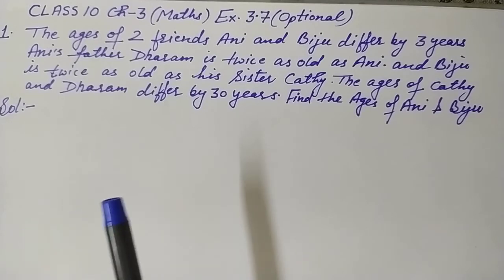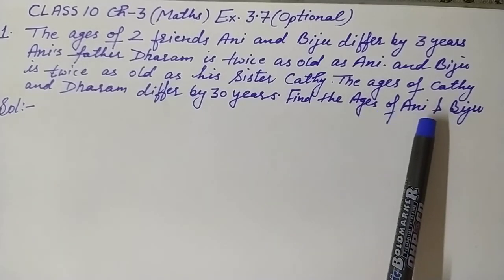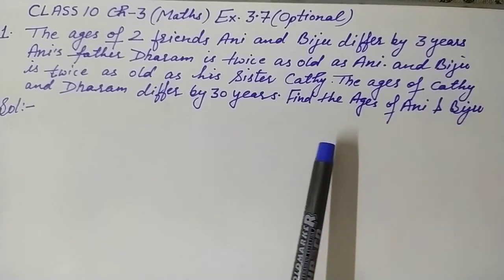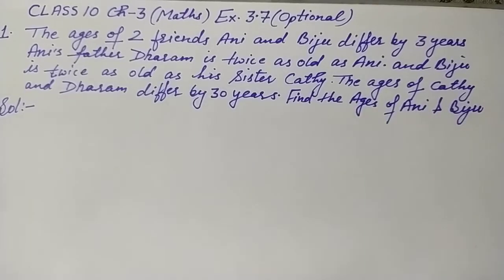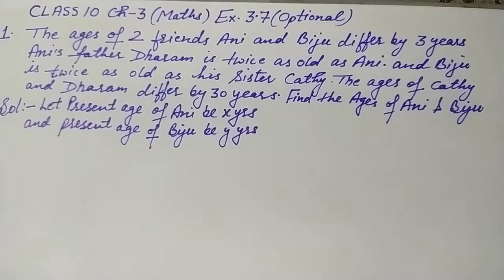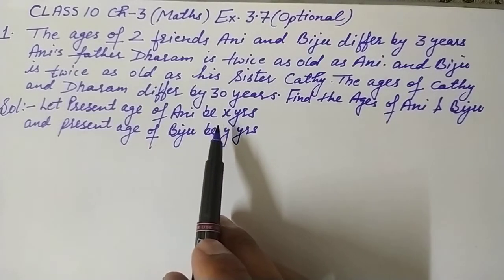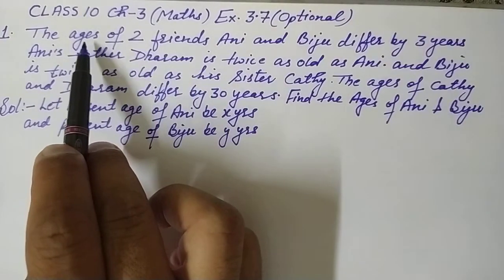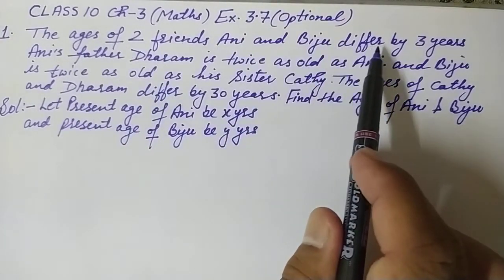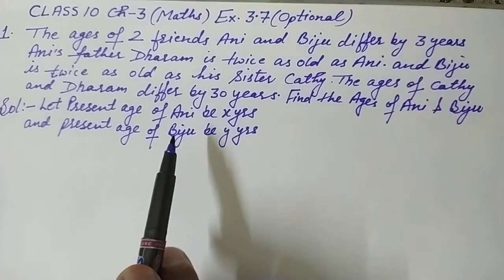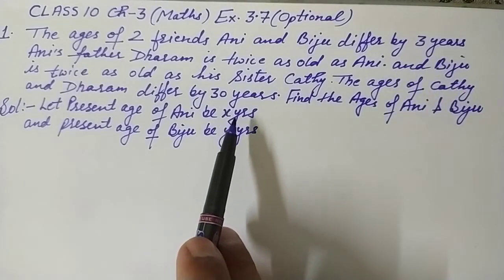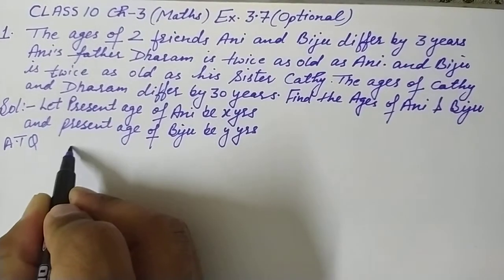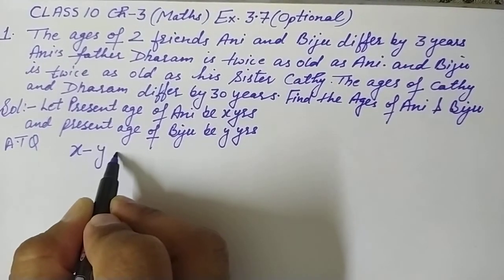For solving this question, we will assume the present age of Ani as X years and the present age of Biju as Y years. The first condition states that the ages of Ani and Biju differ by three years, so according to the question, X minus Y equals three.